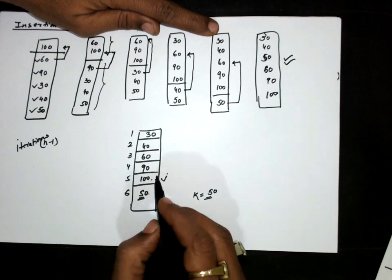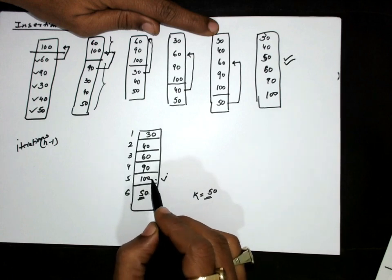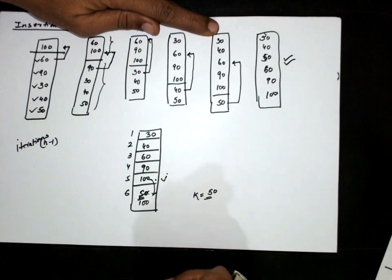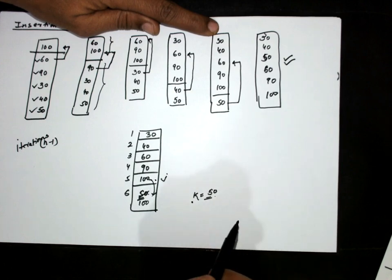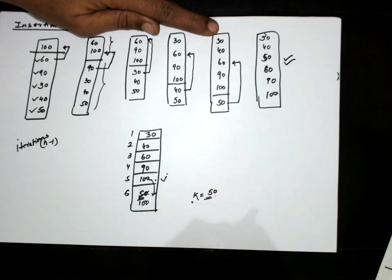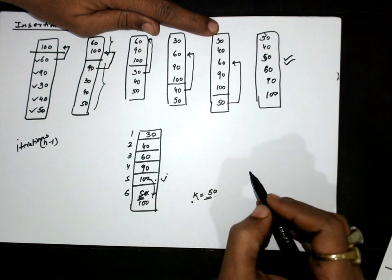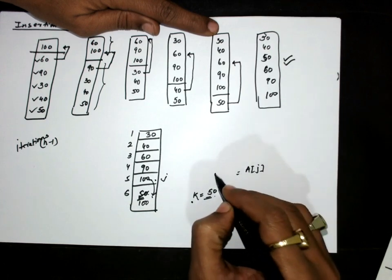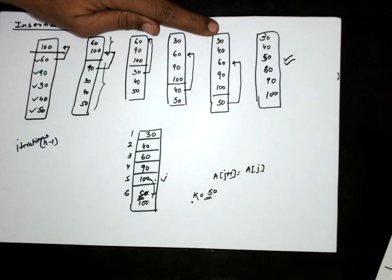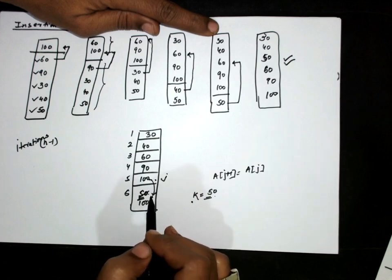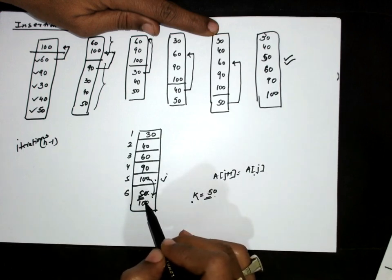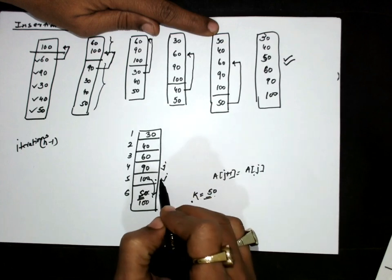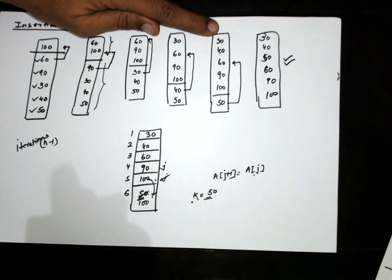So we will exchange these two — but we are not actually exchanging; we are shifting 100 to this place. We have already saved the value as k, so there is no issue of losing data. Every comparison will now take place with k only. So the jth element has been shifted to the j plus first position — the jth element was shifted one step down.